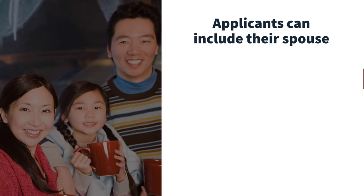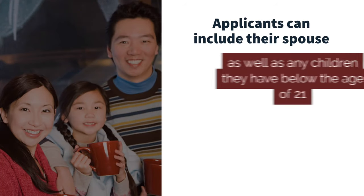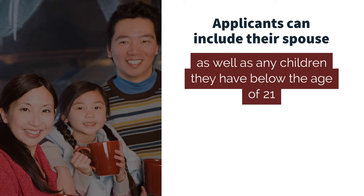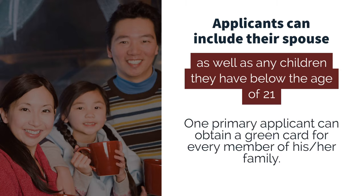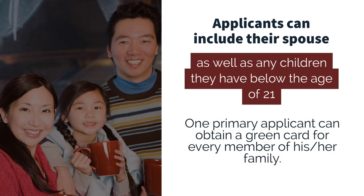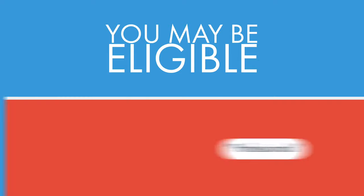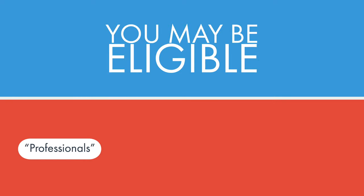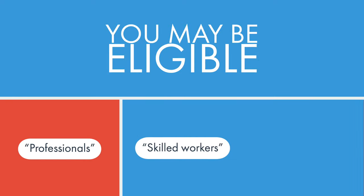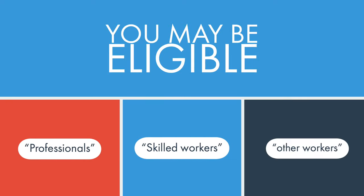Applicants can include their spouse, as well as any children they have below the age of 21, in their EB3 application. One primary applicant can obtain a green card for every member of his or her family. You may be eligible for this immigrant visa preference category if you are a professional, skilled worker, or a worker falling under the other worker subcategory.